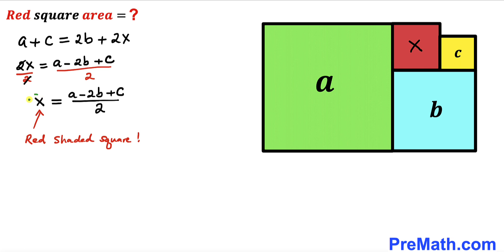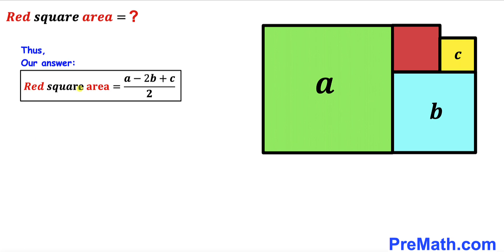Since x represents the area of the red shaded square, the area of the red shaded square is (a − 2b + c) / 2. That's our final answer. Thanks for watching and please don't forget to subscribe to my channel for more exciting videos. Bye!